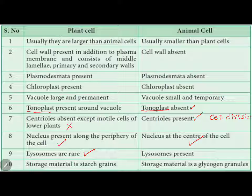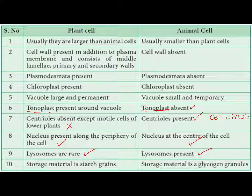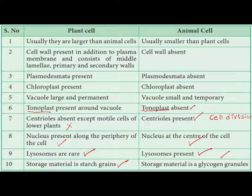Lysosomes are rare in plant cells but present in animal cells. Lysosomes are membranous bags that work for the defense of the cell — whenever a cell organelle dies or a foreign particle enters, the lysosome clears it for the health of the cell. Storage material in plant cells is usually starch grains, while in animal cells it is glycogen. Both starch and glycogen are polymers of glucose, but starch is seen in plants and glycogen in animals — the enzymes for glucose storage likely differ. Those are the differences between plant cell and animal cell.